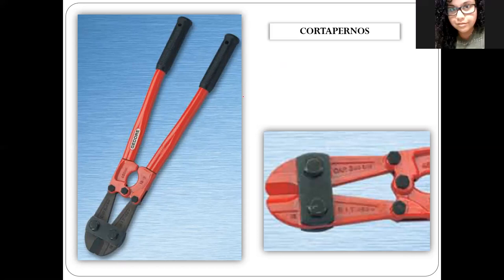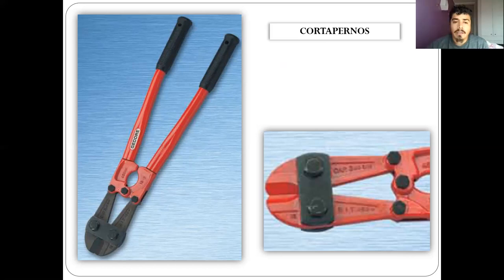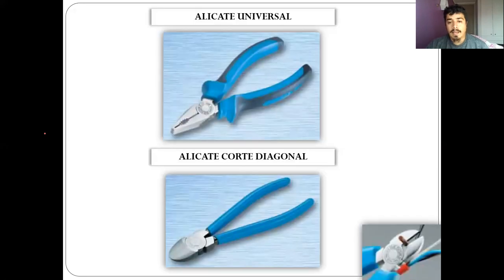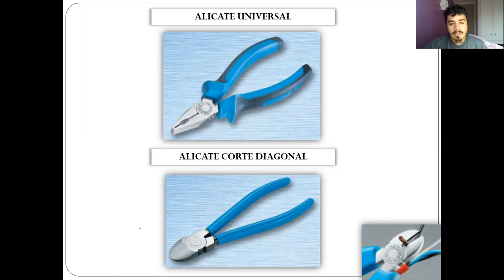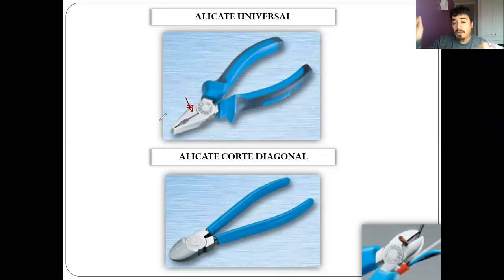El alicate universal es el que probablemente más de alguien tiene en casa. Tiene una sección para cortar cables y también se usa para pelar cables. Para corte diagonal existe el alicate especial para eso. Si nos dimos cuenta, las herramientas vistas hasta el momento casi todas tienen un formato de uso mecánico.